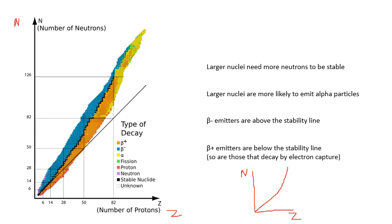Larger nuclei need more neutrons to be stable. Talk about that in a bit. Larger nuclei are more likely to emit alpha particles. The yellow ones there are alpha particles, and the alpha emitters tend to be higher up, tend to be the big fat nuclei up there. Beta minus emitters are above the stability line, beta plus emitters and the ones that do electron capture as well are below the stability line.